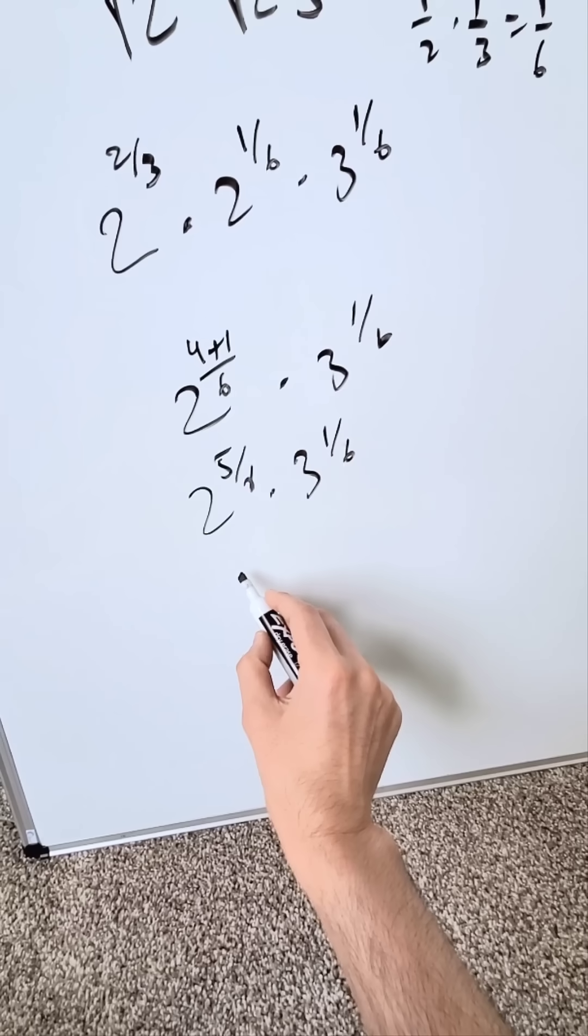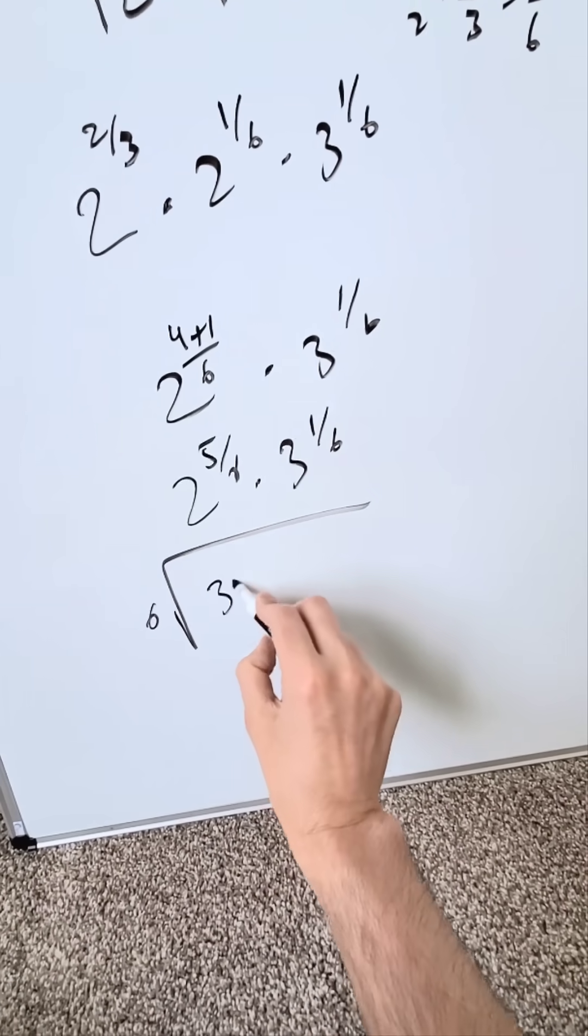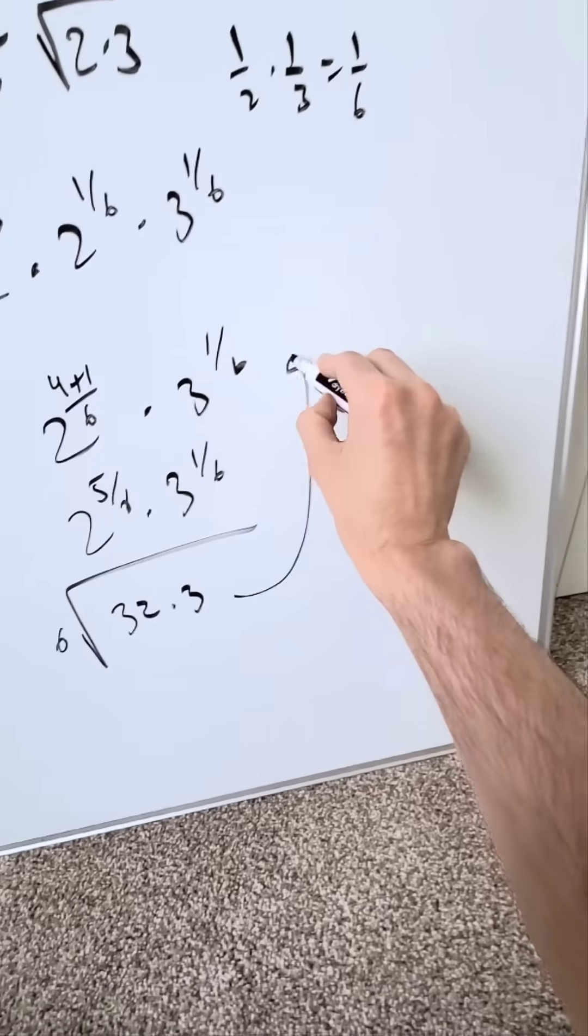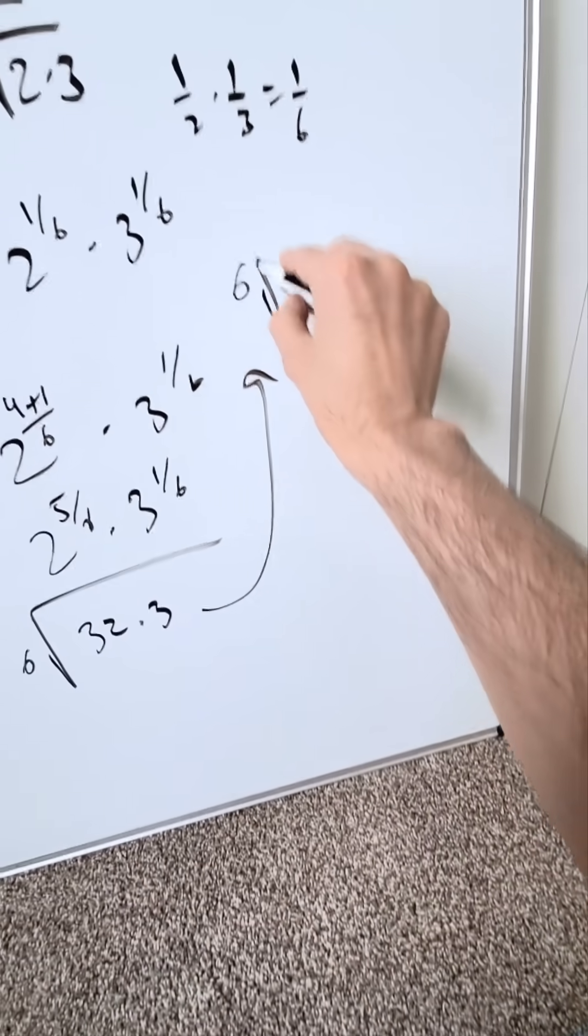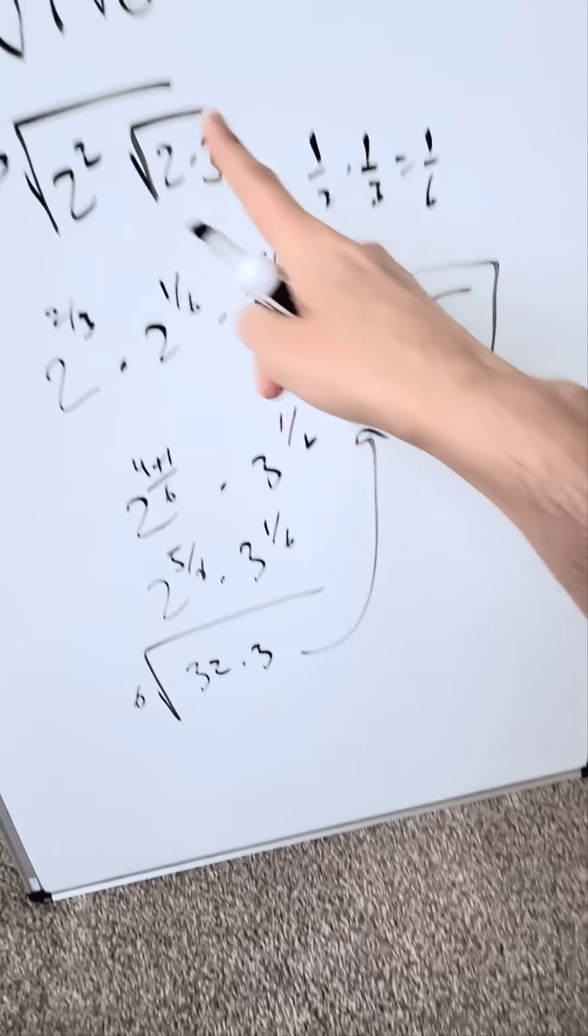I'm really looking over here under a 6 root because both of these have denominators of 6. 6 root, I have a 32 times 3. But if I condense this, I'm looking at a 6 root here of 96. And this right here would be a good answer for that.